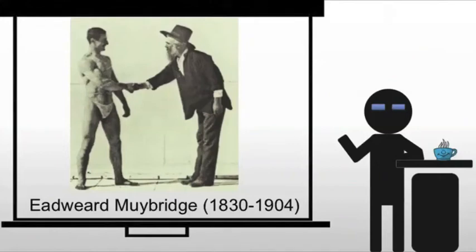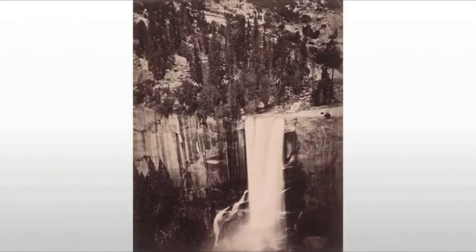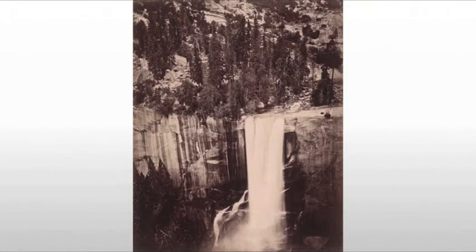Muybridge is going to be rather unique in photography and he's going to have a huge impact not just on photography but on art overall. He starts as a realist photographer who came to prominence for his western images. But one day he's going to be asked to settle a bet for the governor of California as to whether all four legs of the horse ever leave the ground at the same time, something that happens rapidly and is very difficult to make out just watching a horse run.